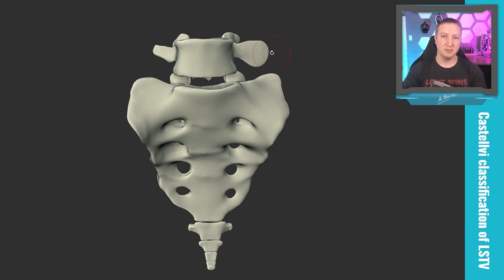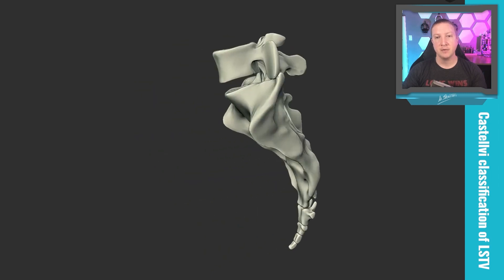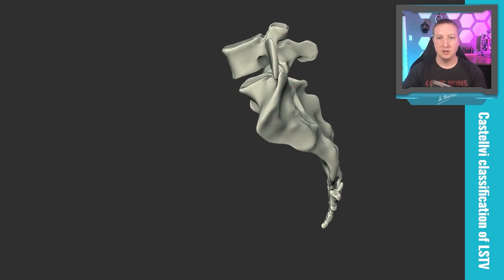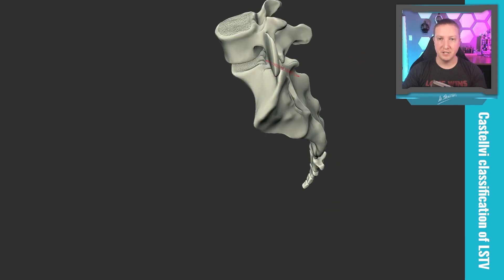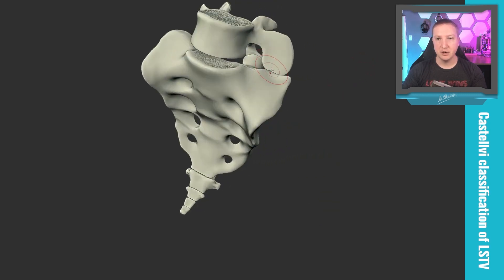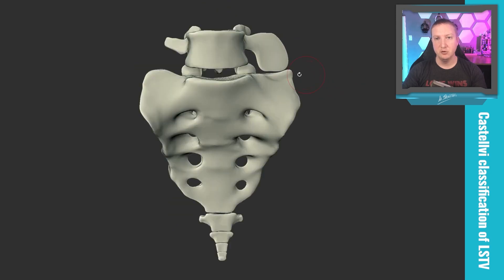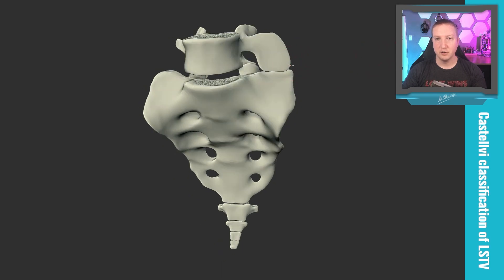Type 2 does matter, because Type 2 is when the transverse process is even larger and it comes down and is actually articulating with the sacrum. Usually this will have a facet ground into the sacrum, and it'll make a joint — so it's a pseudoarthrosis, because we kind of have this joint being formed. These are going to be potentially grinding on each other.